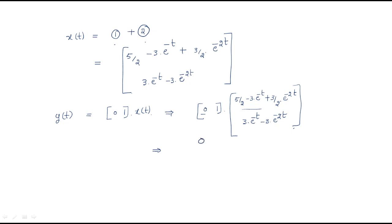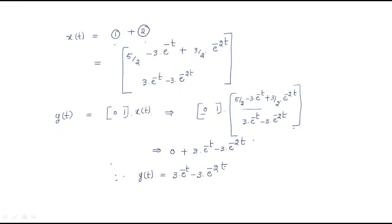Multiplying: 0 times the first element gives 0, and 1 times the second element gives 3·e^(-t) - 3·e^(-2t). Therefore y(t) = 3·e^(-t) - 3·e^(-2t). This is the complete response of the given problem.